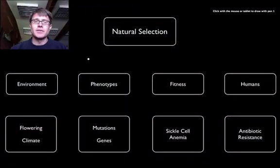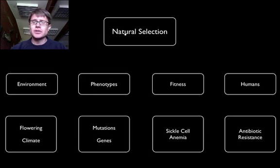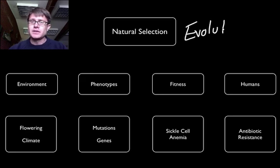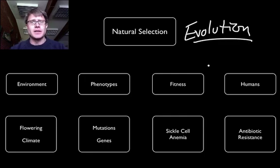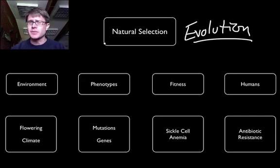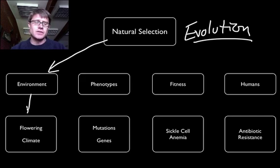I always like to start with an overview of what we're going to talk about. Natural selection causes evolution, and what's neat about it is it's different than random events that cause evolution. What's interesting about natural selection is it actually creates organisms that are better adapted to their environment. The first thing I'm going to talk about is how changes to the environment, especially climate changes right now, are affecting life on our planet.